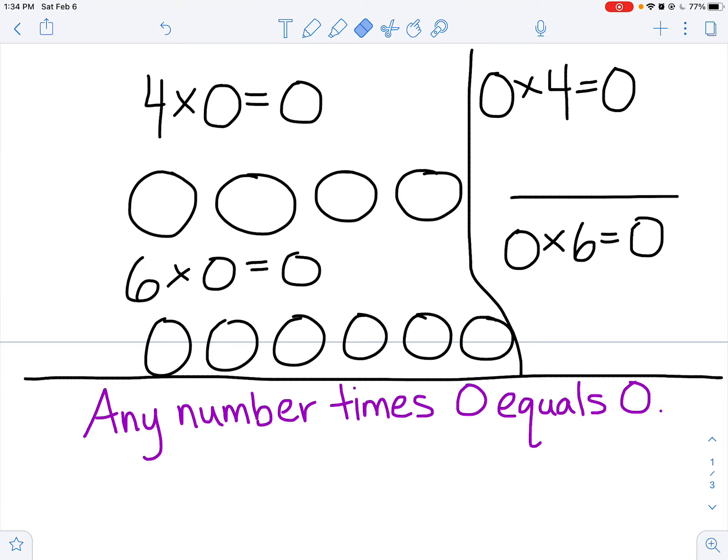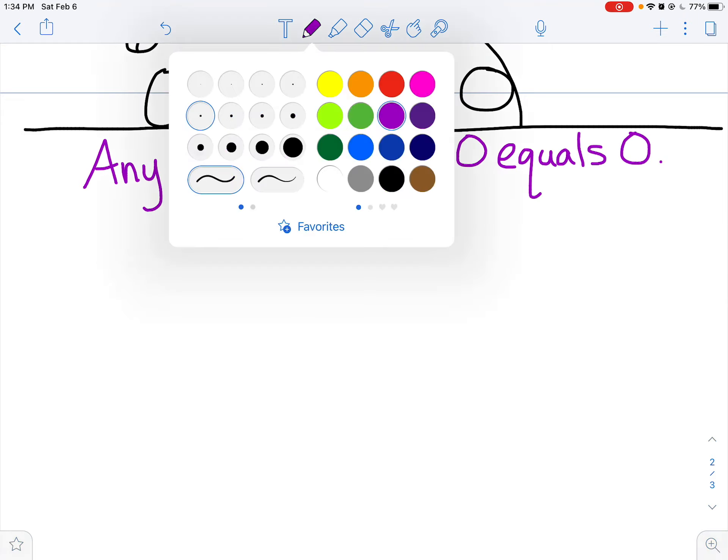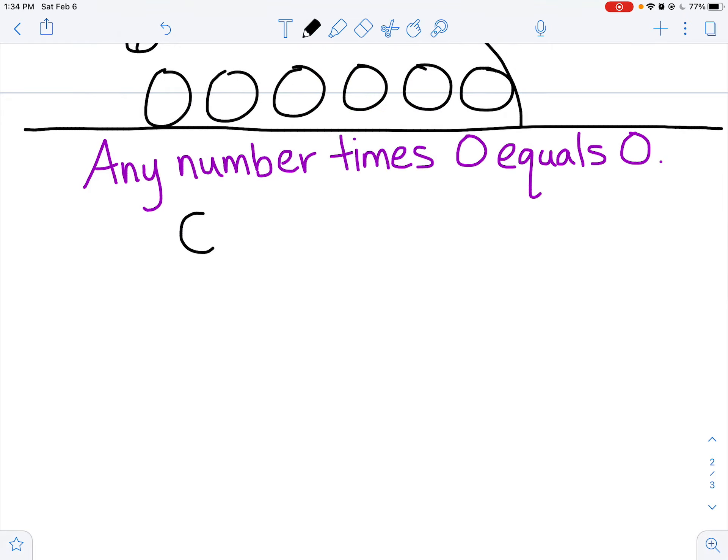Now with division, division's a little funky with the 0s. If I wanted to do 0 divided by 3, I can do that. So that means how many items, 0, divided into 3 groups. So I would represent it like this. Here's my 3 groups, but I have no items that are being divided into the 3 groups. So I'm left with 0 in each group. That kind of makes sense, right?